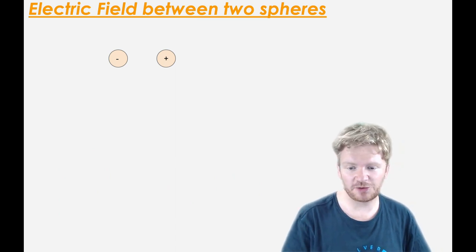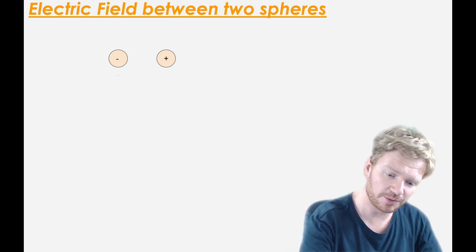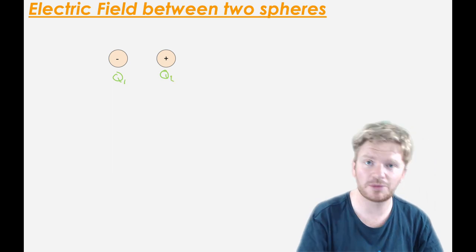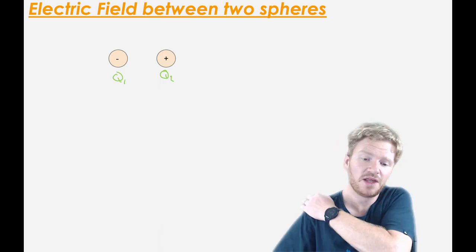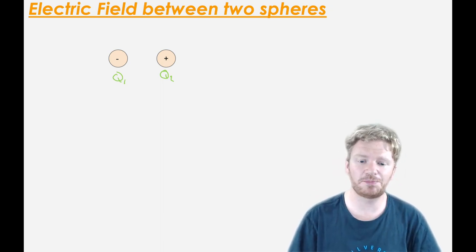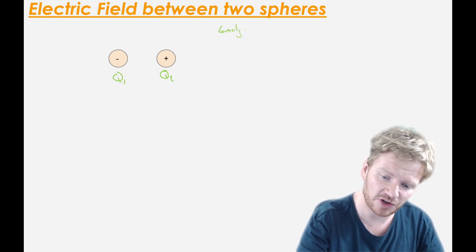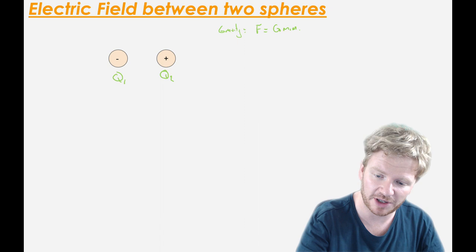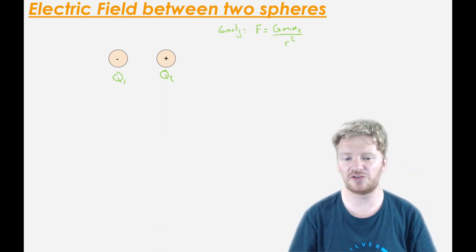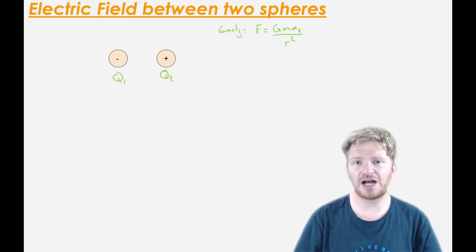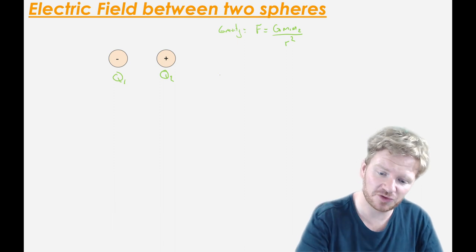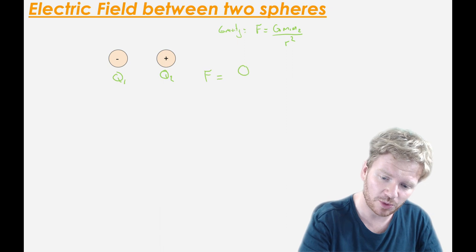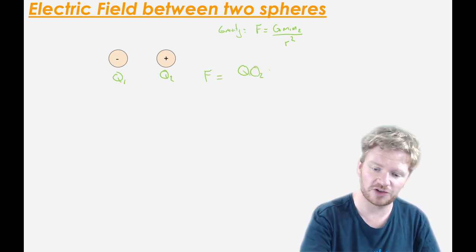Let's think about the electric field strength between two spheres with charges Q1 and Q2. Charge is always measured in coulombs. If you're thinking carefully, you might see a parallel with gravity: the force between two massive objects is equal to the gravitational constant G multiplied by the product of their two masses divided by the square of the distance between them. For electric force, it's due to charge rather than mass, so it makes sense that the force between two charges will have the product Q1 and Q2.